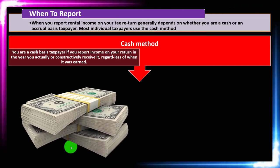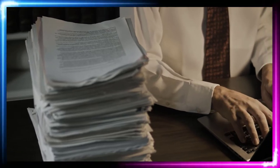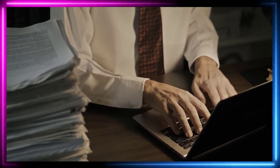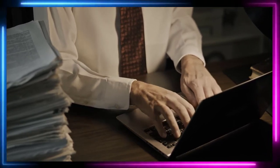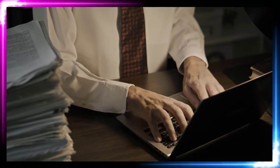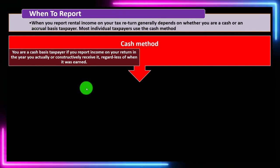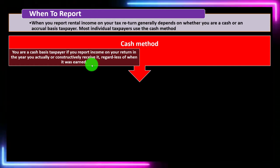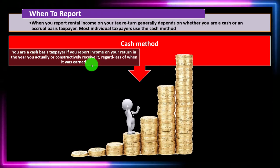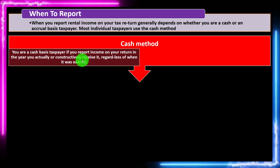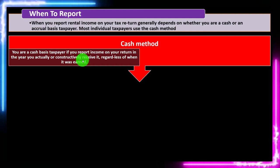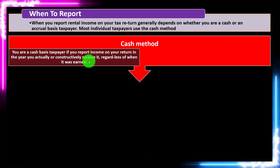On the cash basis, you record revenue when you actually get the money or have constructively received it. For example, if rent was incurred in December 2021 but not paid to you until January, under pure cash basis you wouldn't record the income until January. You constructively receive income when it is made available to you — for example, by being credited to your bank account.